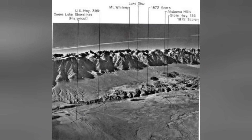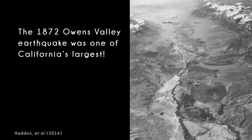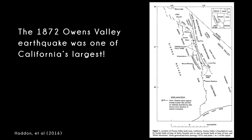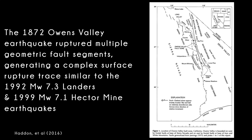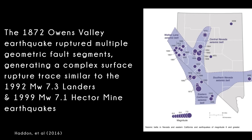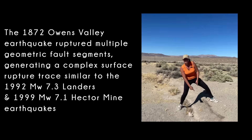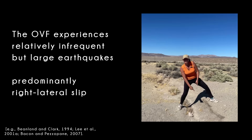Of the about 250 residents, 27 were killed and 56 were injured. Just outside of the town of Lone Pine are graves for the 27 people who died from this major earthquake, and these grave sites sit right on one of the Owens Valley strands that broke in 1872. The 1872 Owens Valley earthquake ruptured multiple geometric fault segments, generating a complex surface rupture trace similar to the 1992 7.3 Landers quake, the 1999 7.1 Hector Mine quake, and the more recent large Ridgecrest earthquake.